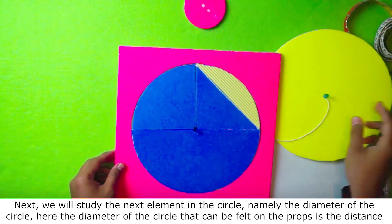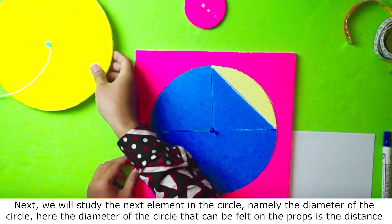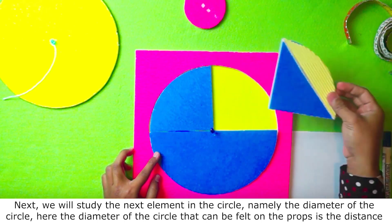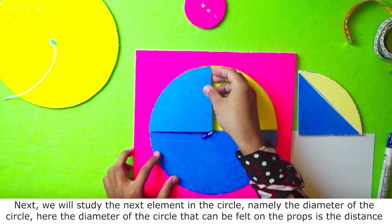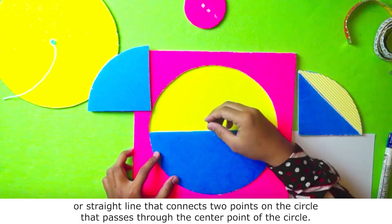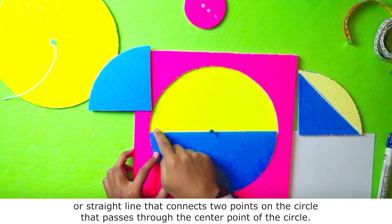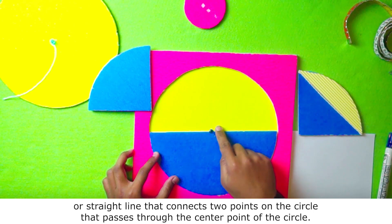Next, we will learn the next element in the circle, namely the diameter of the circle. That can be felt on the props is the distance or straight line that connects two points in the circle that passes through the center point of the circle.